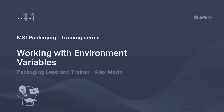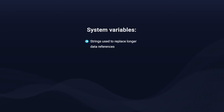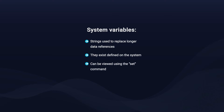Welcome to lesson number 11, working with environment variables. It's time to go over the system variables. System variables are strings used to replace longer data references. They already exist defined on the system and can be viewed using the set command in the command prompt. They can also be viewed from the system properties, advanced environment variables.